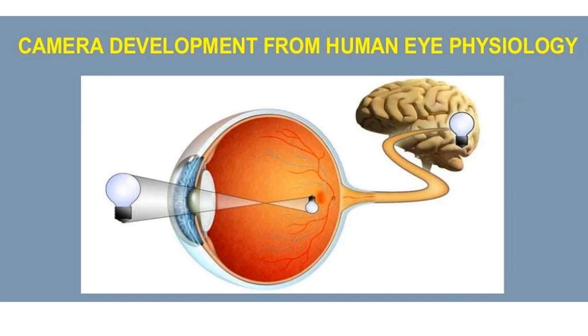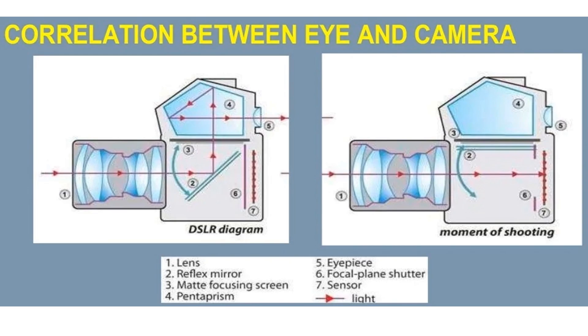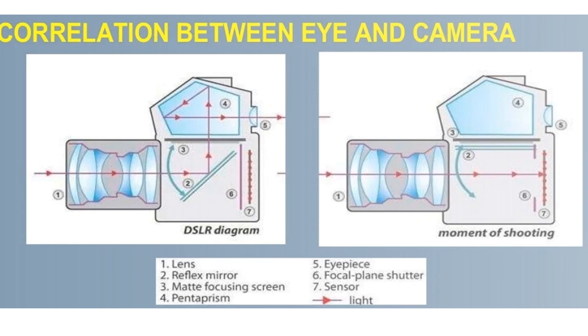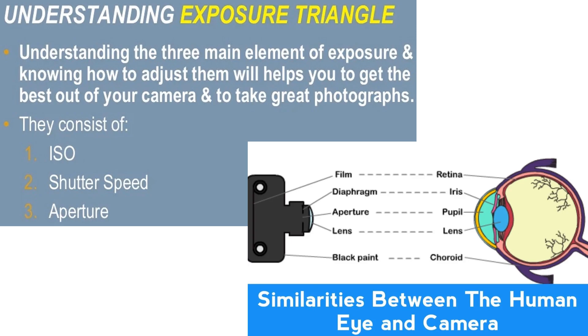Topics covered include communication, dental technician, marketing, camera development, and the correlation between eye and camera physiology. Understanding the exposure triangle — the three main elements of exposure — and knowing how to adjust them will help you get the best out of your camera and take great photographs. These three elements are: 1) ISO, 2) shutter speed, and 3) aperture.